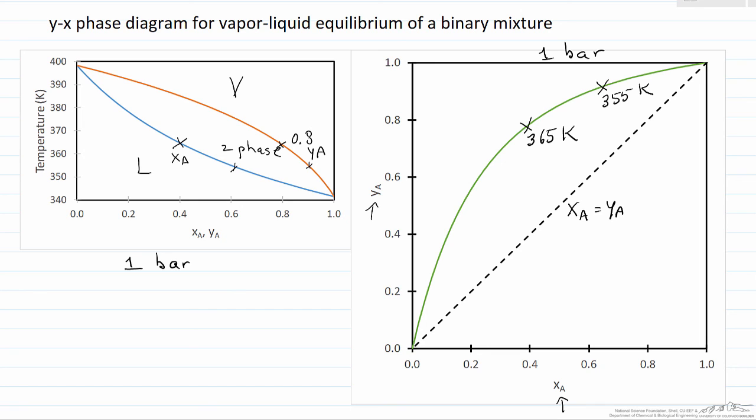But for now, the idea is understanding this ya, xa diagram, keeping in mind that each point corresponds to a different temperature where we have vapor liquid equilibrium.